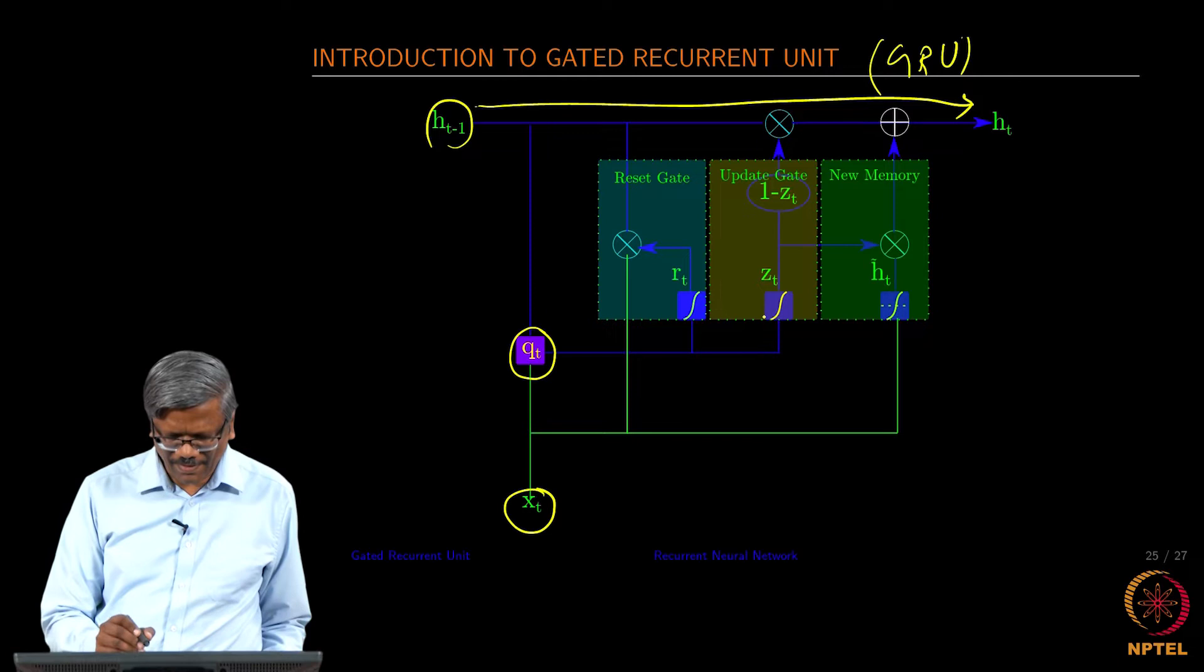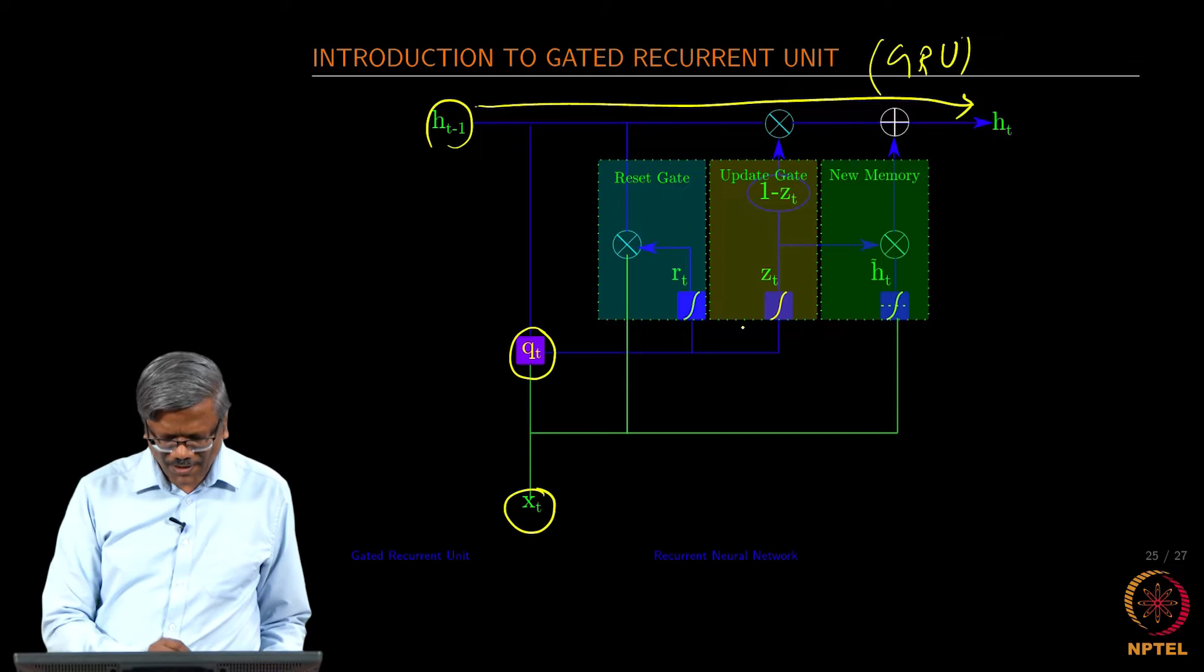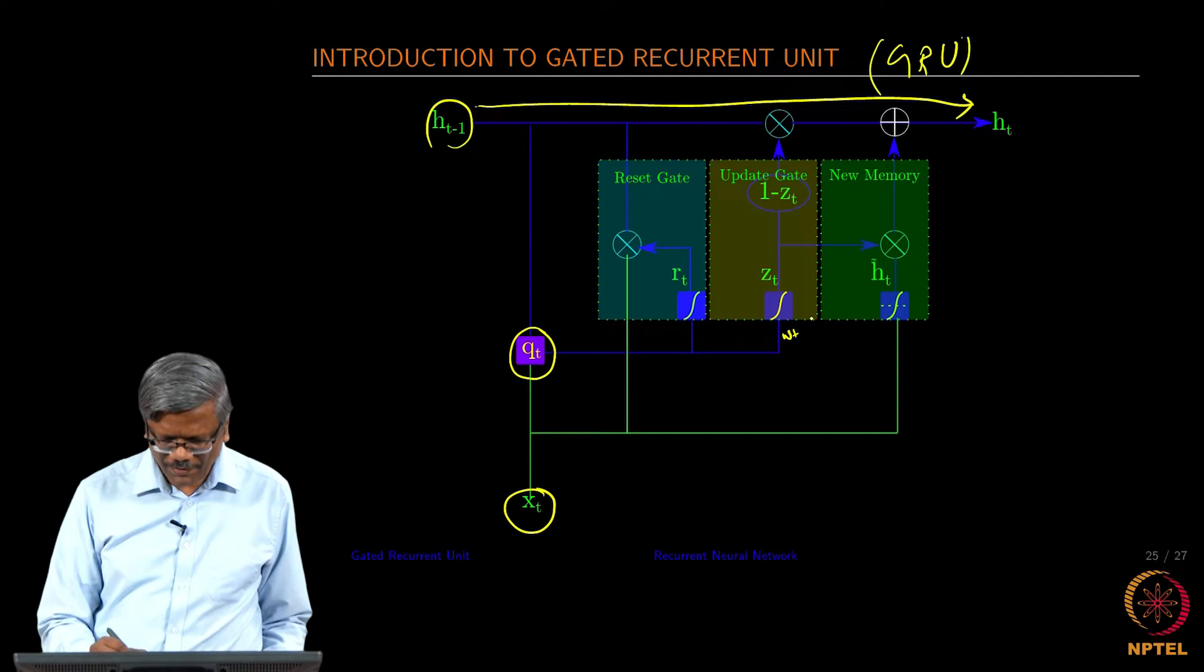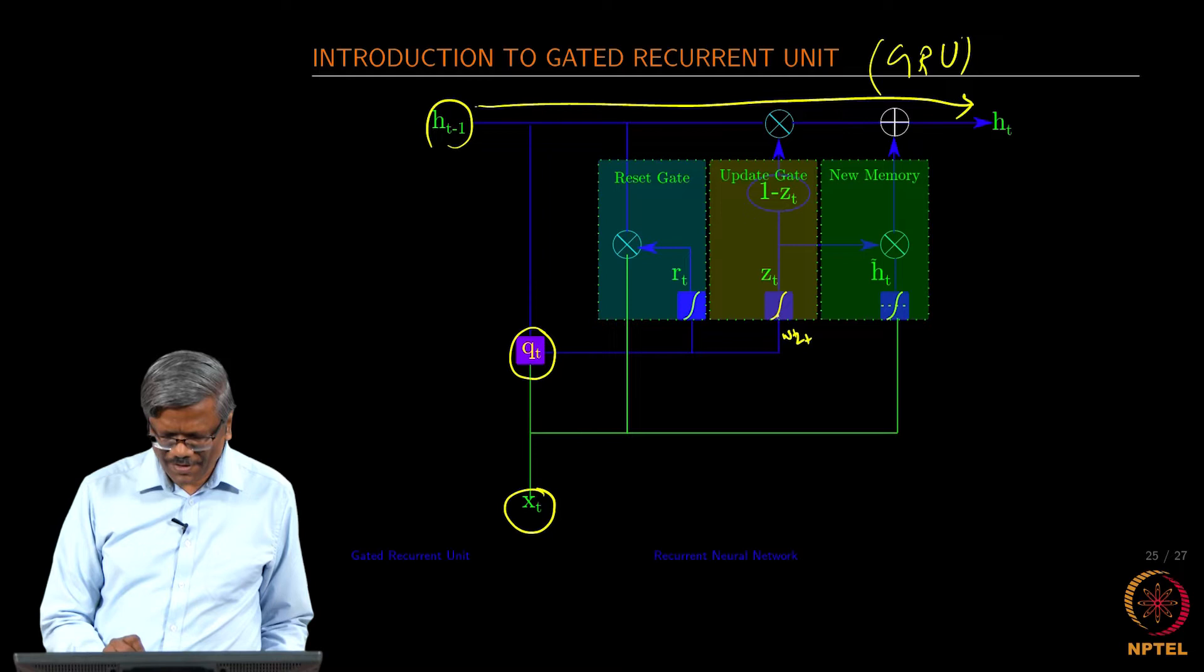Rather, we have the update gate that connects q_t and the V_w here which we can call it as w_z_t.